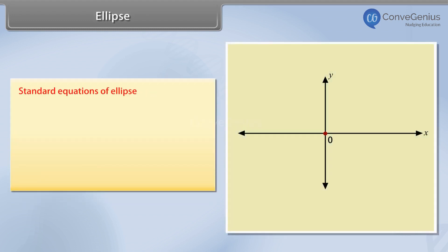Standard equations of an ellipse: Let the center of the ellipse be at the origin and its foci are on the x-axis or y-axis. Two such orientations are possible.